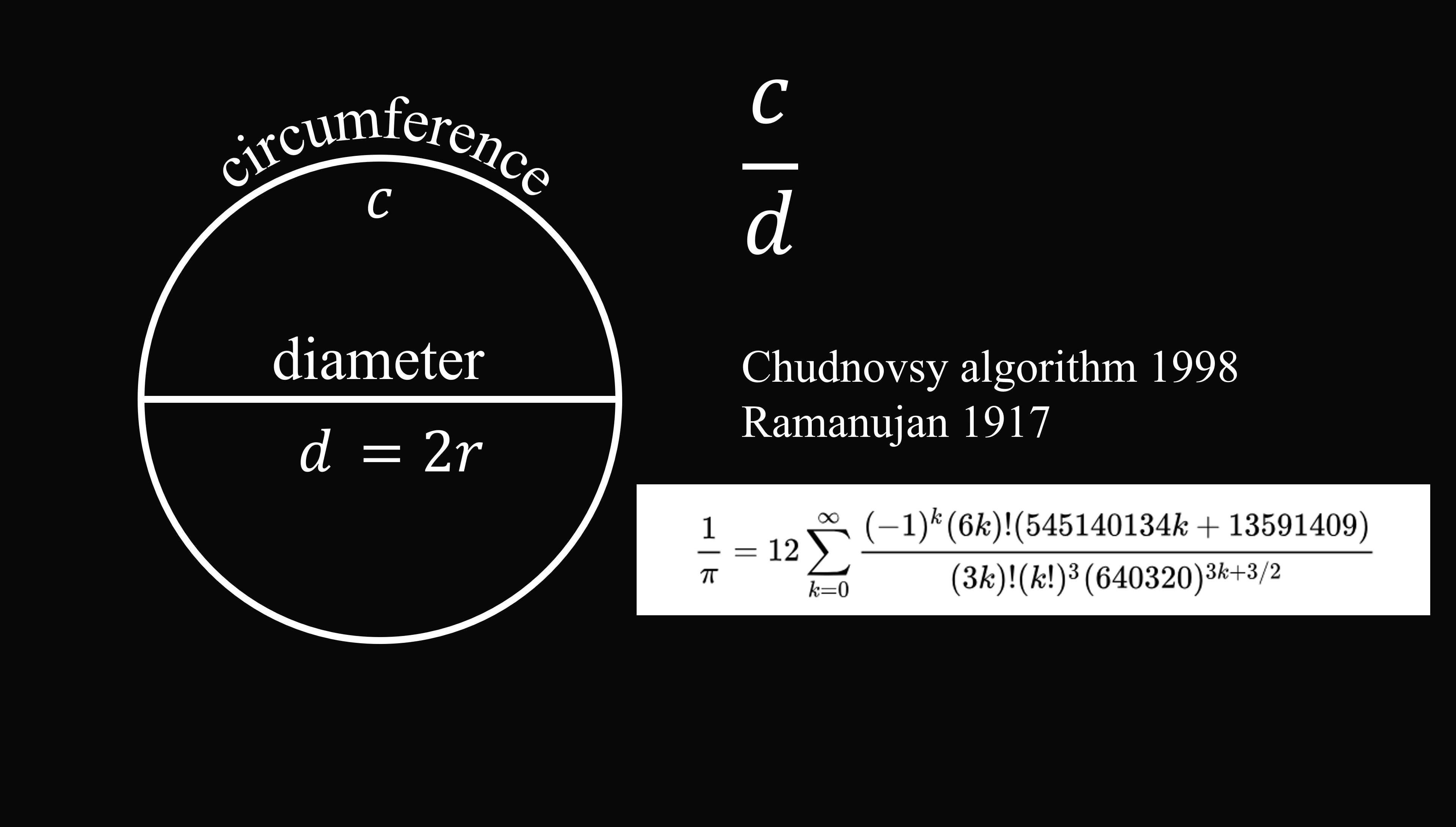And this can get pi accurate to so many digits. The current record is something like over 105 trillion digits. So there's a long history of computing the digits of pi.